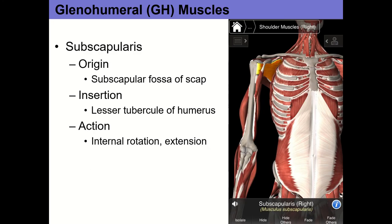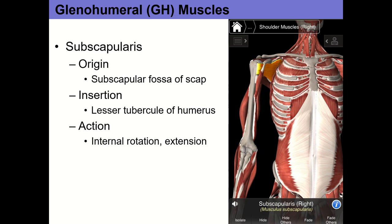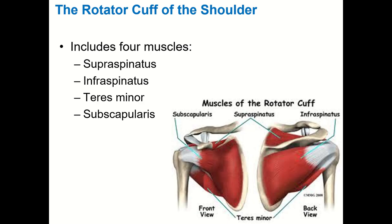Subscapularis originates from the subscapular fossa and inserts on the lesser tubercle of the humerus. It is an internal rotator and the only anterior rotator cuff muscle. The four rotator cuff muscles are: subscapularis, supraspinatus, infraspinatus, and teres minor.